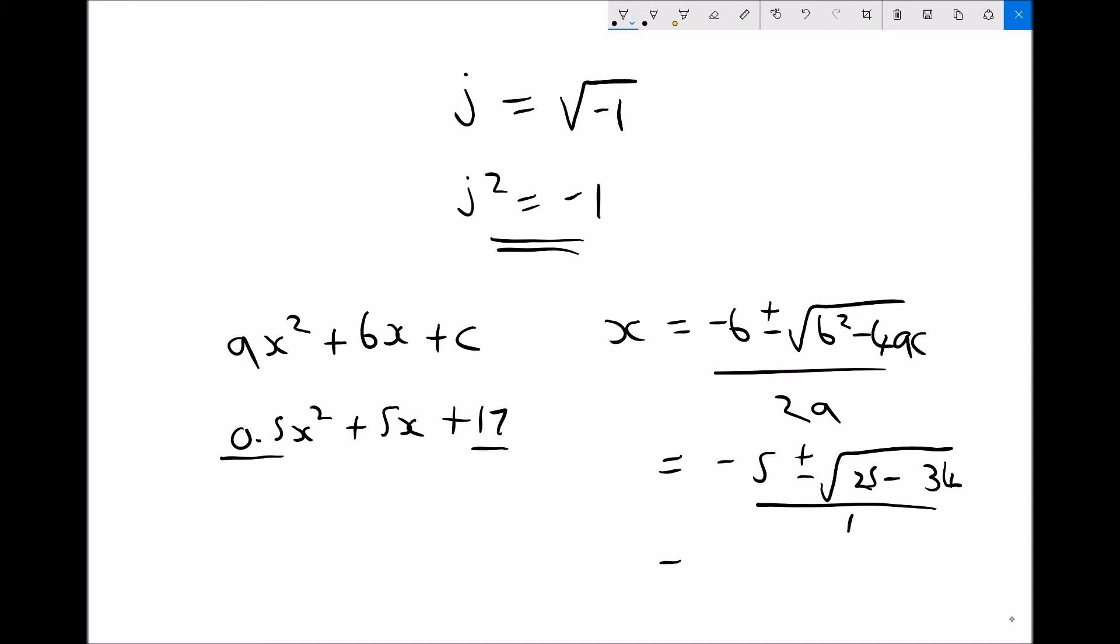Next I can simplify that, and I will get minus 5 plus or minus the square root, well 25 minus 34 is a negative number, it's negative 9. So what I have here is a complex number which has a real part, minus 5 is a real number, and an imaginary part square root of minus 9. I can't square root minus 9 using traditional math.